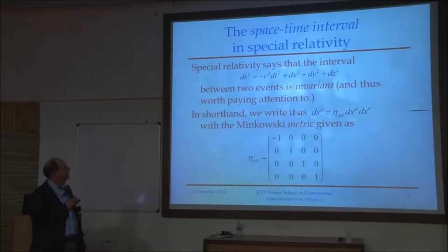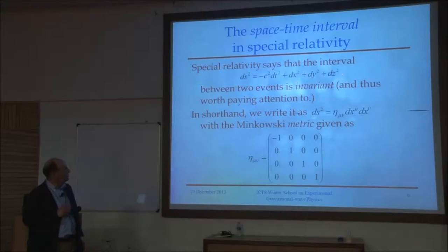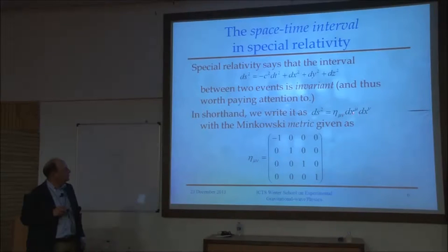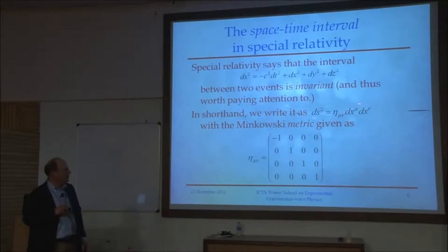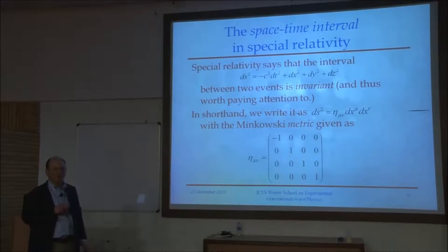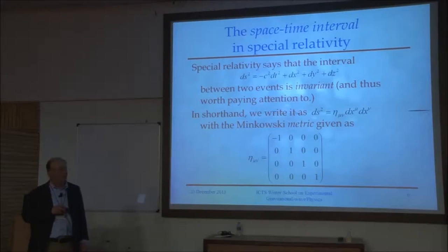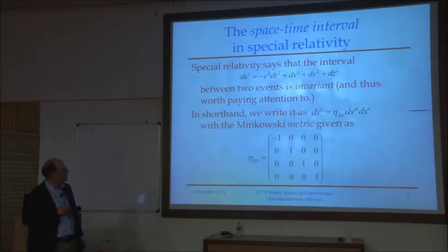We can summarize this statement with a shorter expression: the square of the interval is the Minkowski metric tensor η_{μν} times dx^μ dx^ν. There's the traditional Einstein summation convention where whenever you have an index repeated twice, you sum over it from 0 to 3. Since both μ and ν are summed, there are actually two summation signs. The Minkowski metric is simple — only diagonal terms — but this compact notation amounts to the same statement as before.